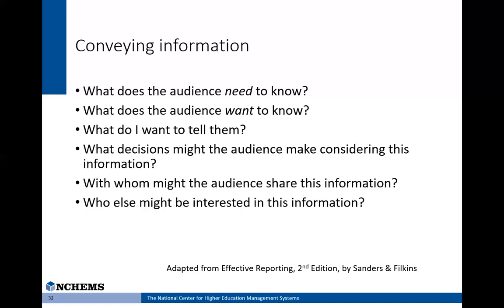The fifth question is: with whom might the audience share this information? You need to think about who they're going to be sharing this with — it might just be for them to make a decision themselves, or it might be that they're going to bring it to their boss, the president of the university, the board, or to students themselves to help those individuals make decisions. It's important to anticipate who else is likely to see the information and ensure that you expand your idea of your audience. The primary audience who came to you directly is key, but think about who else they might be sharing this with, as there might be more context you want to present because of that.